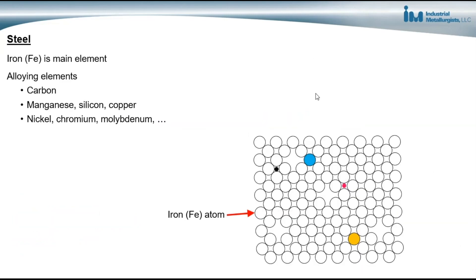In steel, iron is the main element and various alloying elements are added depending on the type of steel. In most steels, the most important alloying element present is carbon. Other alloying elements include manganese, silicon, and copper, and in some alloys, nickel, chromium, aluminum, and other alloying elements are added. The alloying element added depends on the desired properties of the steel.